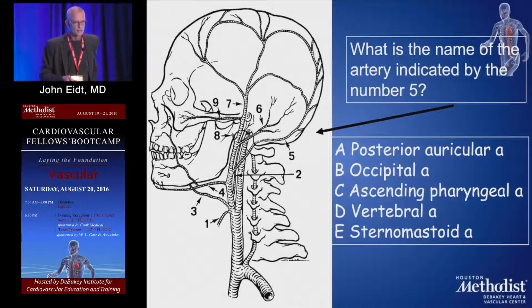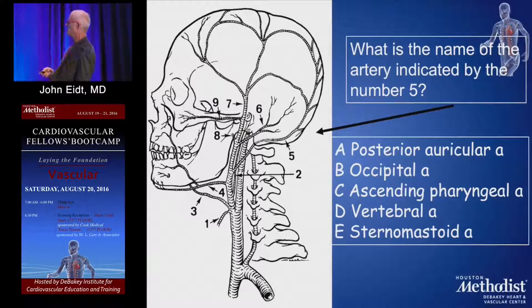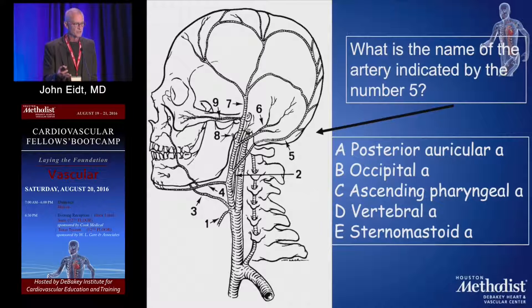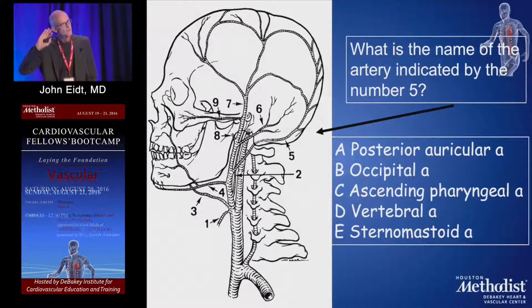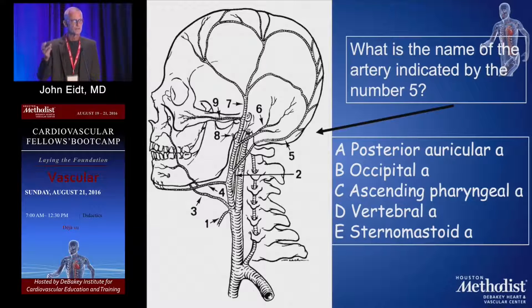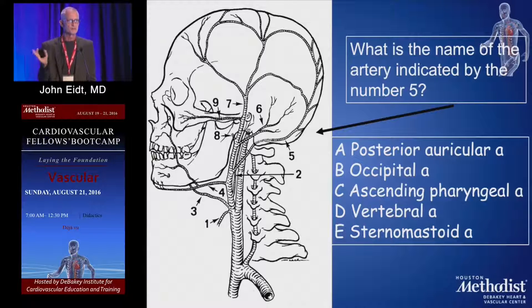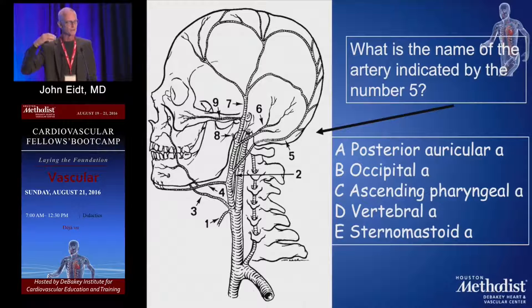What is the name of the artery indicated by number five? What's relevant about that is when you go distally on an ICA doing an open endarterectomy, the two branches you're likely to have to divide would include the occipital as the last branch. But the more common branch you almost always divide is the branch to the sternomastoid — the sling that keeps the hypoglossal nerve pulled out. When you divide that branch, the hypoglossal can fall away toward the tongue.